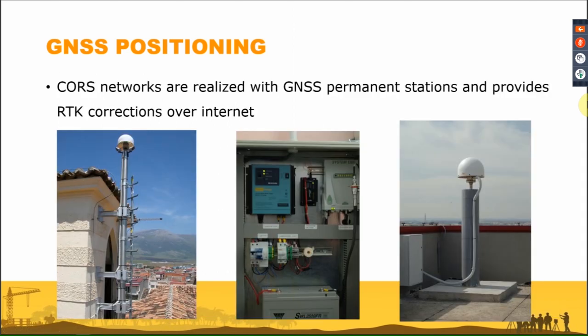Images show the CORS network with antennas placed on top of buildings in stable locations. It looks like a single-station solution, but the data are not sent directly by radio to the rover. Instead, the data are sent to a control center, which elaborates all data and provides corrections to the rover via internet connection.